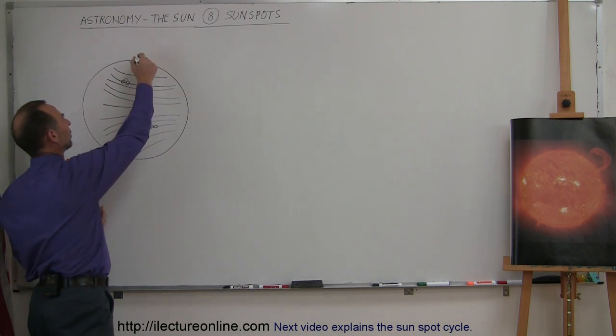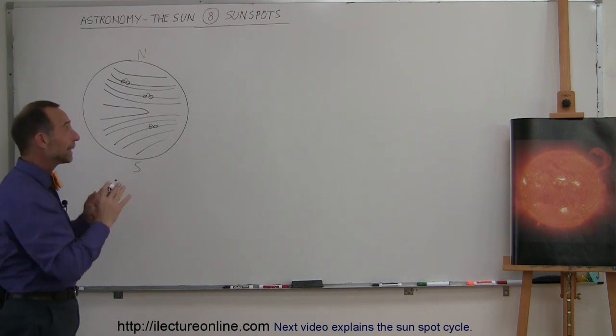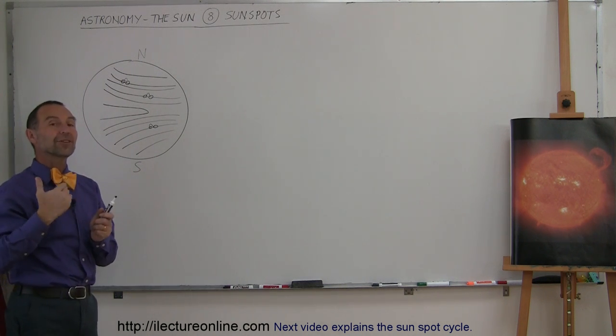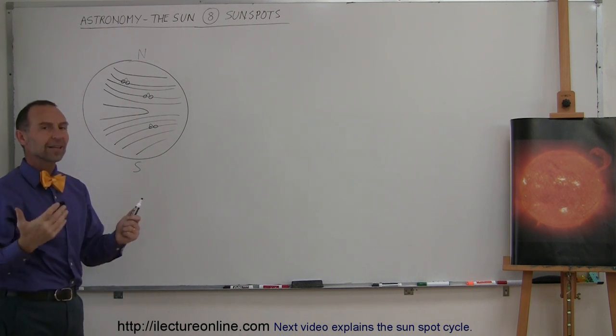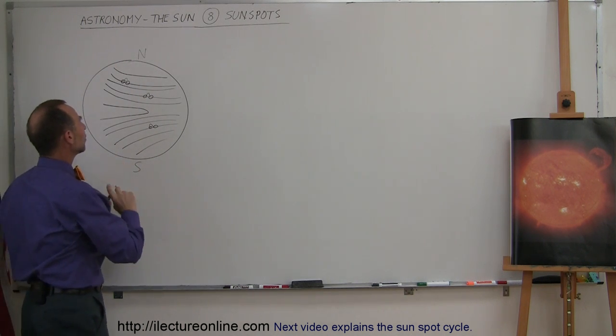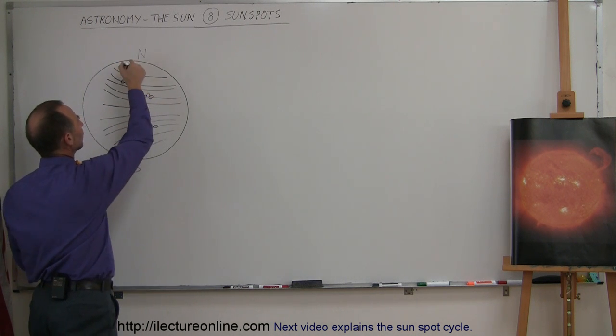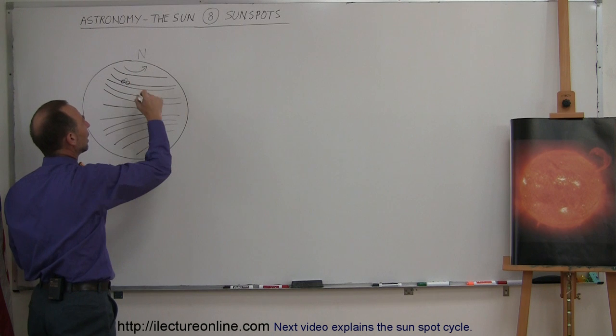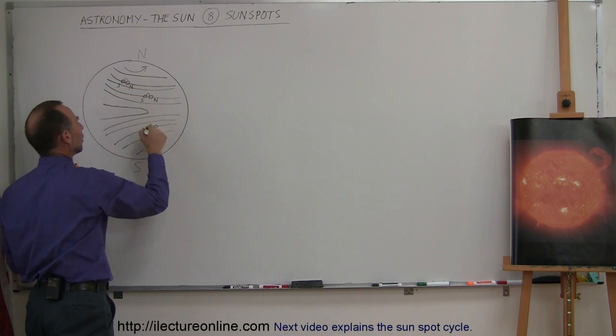The Sun is like a big magnet with the North Pole at the North and the South Pole at the South. The magnetic North and South Pole don't necessarily have to match up with the actual physical North and South Pole of the Sun, but let's say in this case it does. When sunspots occur, the leading sunspot will be North and the trailing sunspot will be South.